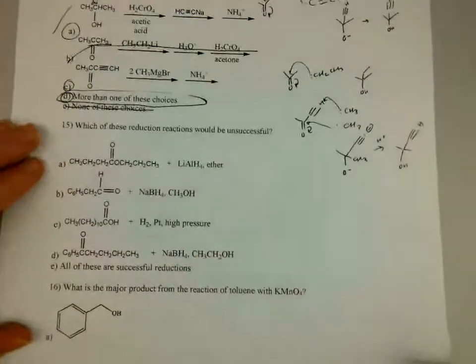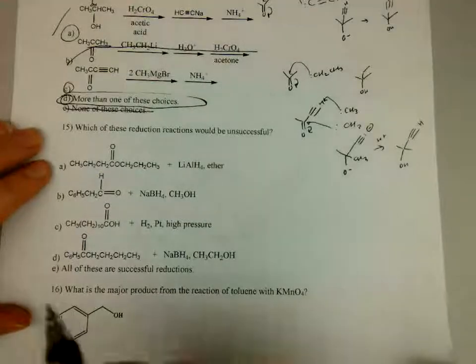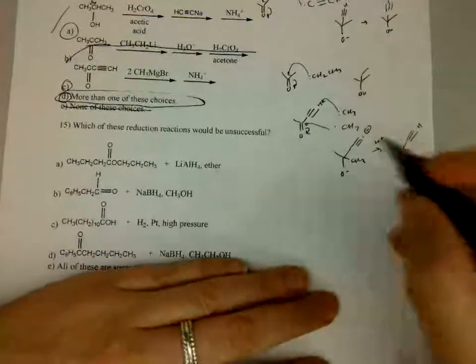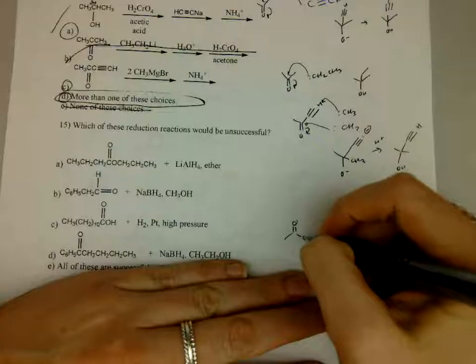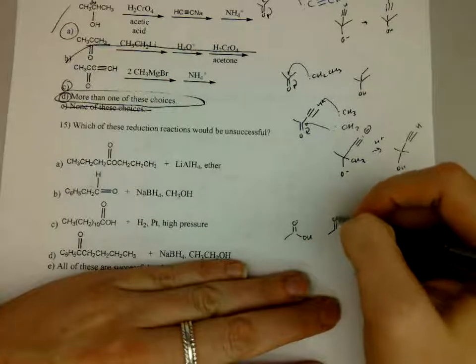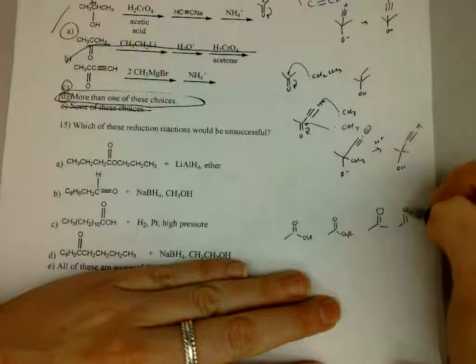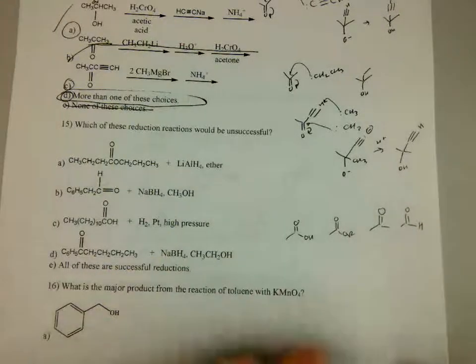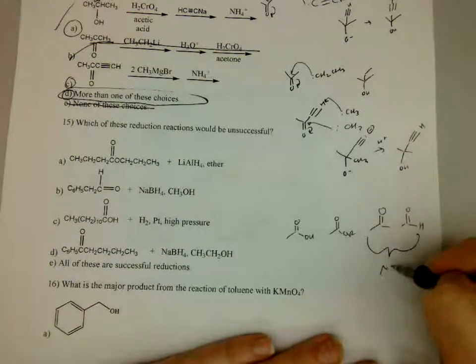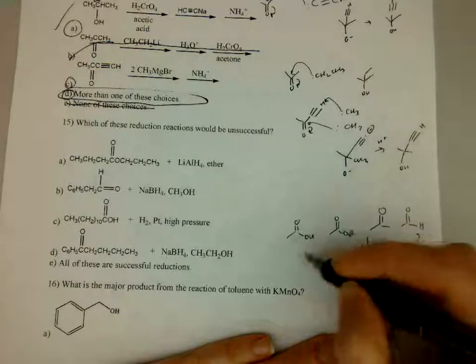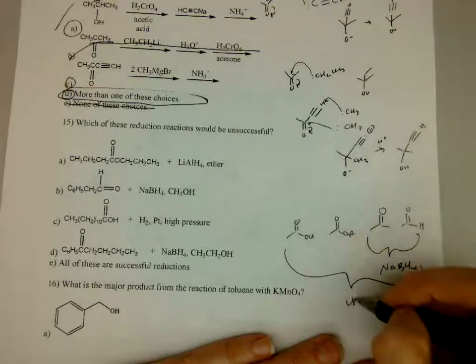All right, let's go to number 15. Now remember that chart that we drew. You've got carboxylic acids, esters, ketones, and aldehydes. These in NaBH4 will reduce only these two. LAH will reduce all of these.